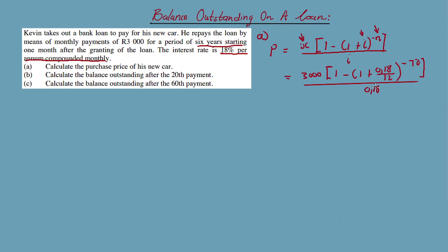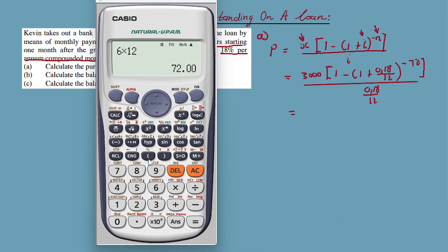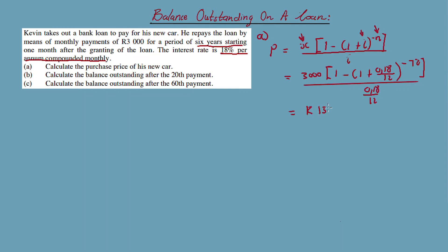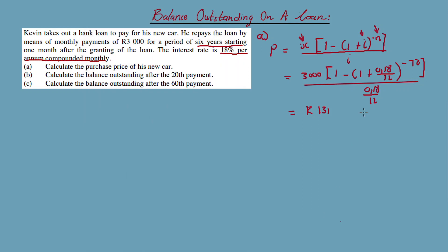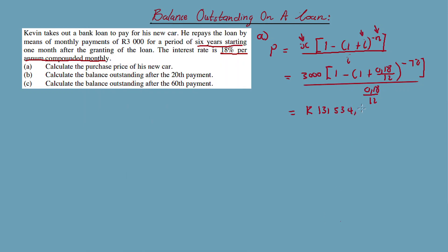So the answer is 3,000 times 1 minus 1 plus 0.18 divided by 12, everything raised to exponent minus 72, close bracket, then divided by 0.18 divided by 12. The answer is 131,534.00. This is our answer. This is the total loan amount.